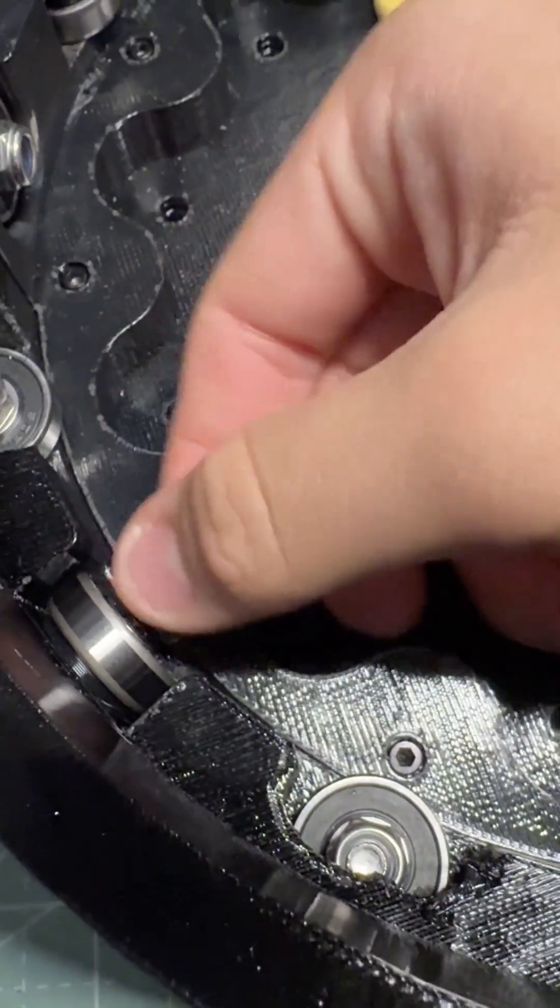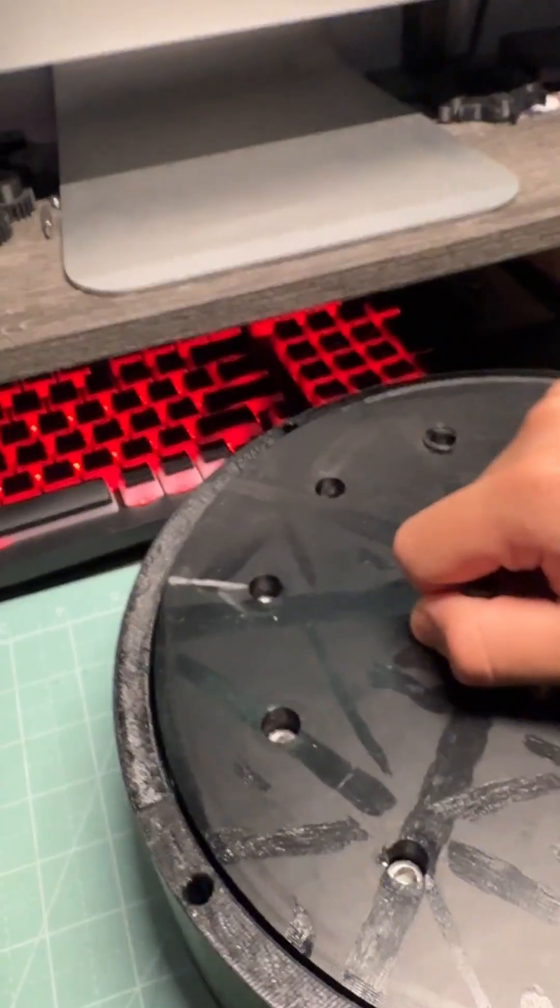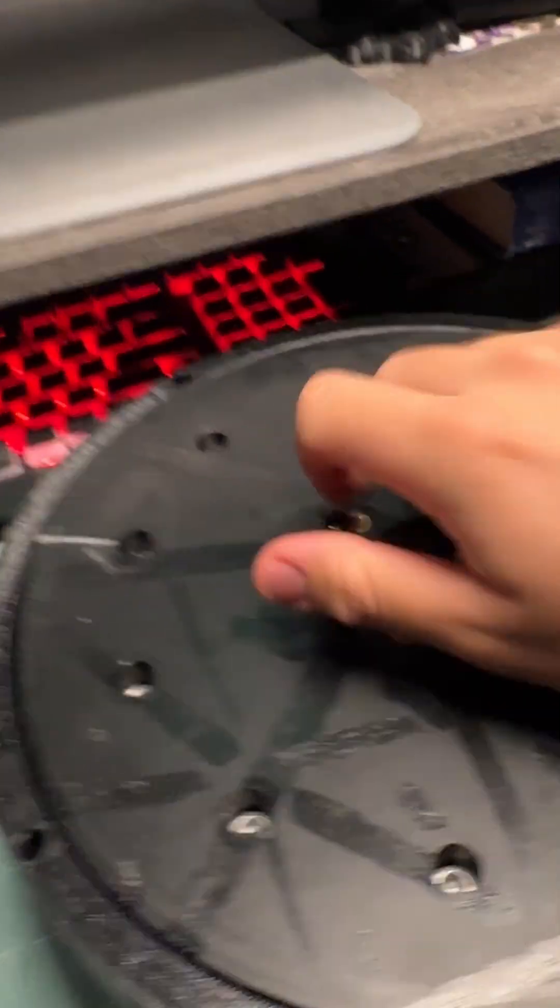So to fix this, I replaced these nylon nuts with thinner hex nuts, which aren't as secure as the nylon nuts, but we'll have to do for now. After that, I tested the friction again, and it was still difficult to turn.